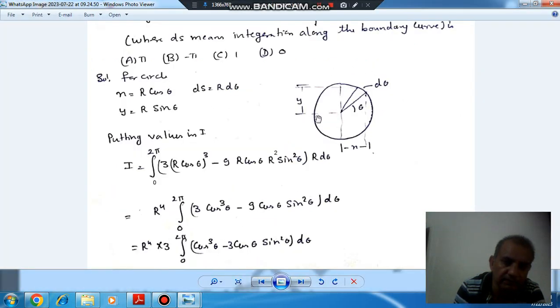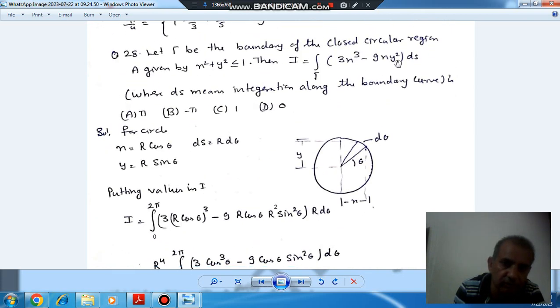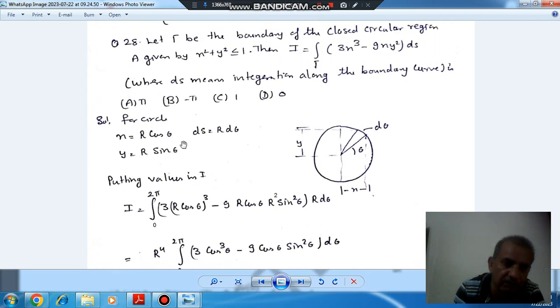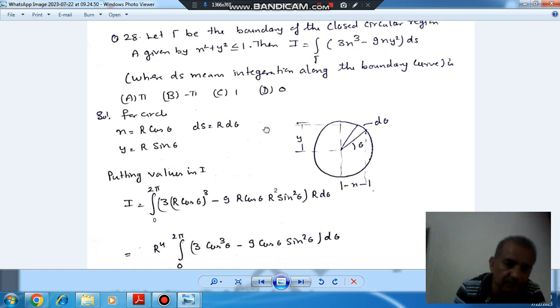So this is your given circle, and suppose at any angle θ the coordinates are x and y. Consider a strip subtending an angle dθ at the center. Then this ds will be r dθ, x will be r cos θ, and y will be r sin θ. So putting the values of x, y, and ds in this integral you get this.